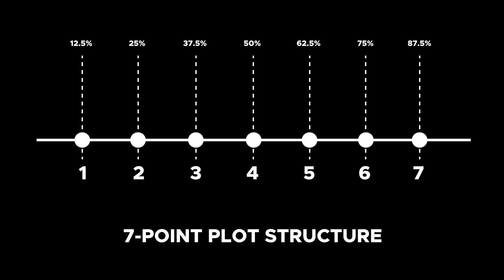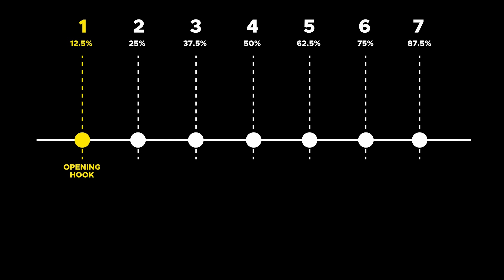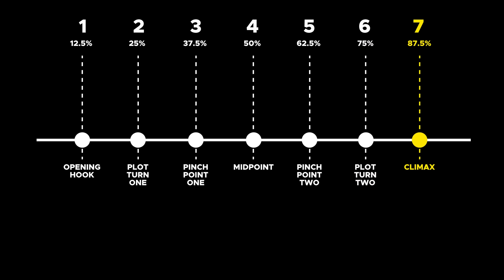In the seven-point structure: the opening hook introduces the protagonist, especially their flaws and desires. Plot turn one thrusts the protagonist from the ordinary world into the extraordinary world. Pinch point one applies pressure through the antagonist. The midpoint is where the protagonist fully moves from passive reaction to active action. Pinch point two forces the protagonist into their darkest and lowest moment. Plot turn two is where the protagonist discovers the key piece of information to defeat the antagonist. The resolution is where the protagonist achieves or fails to achieve their object of desire.